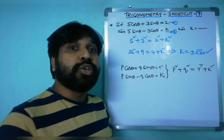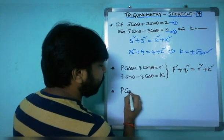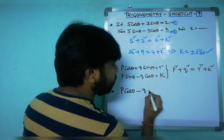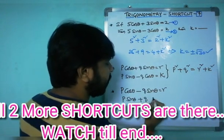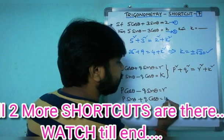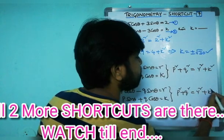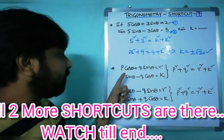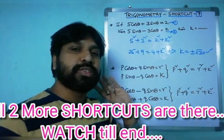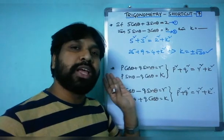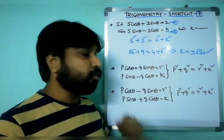There is another formation also. If the form is p cos θ − q sin θ = r and p sin θ + q cos θ = k, that is a plus-minus or minus-plus combination, it still reflects the same formula: p² + q² = r² + k². So both combinations give the same result — very easy using this approach.